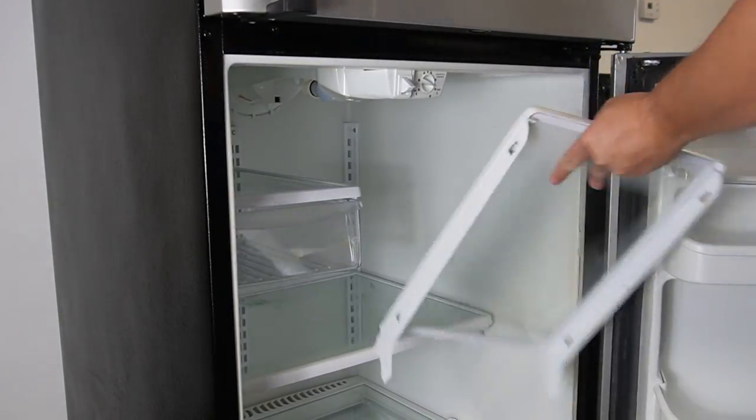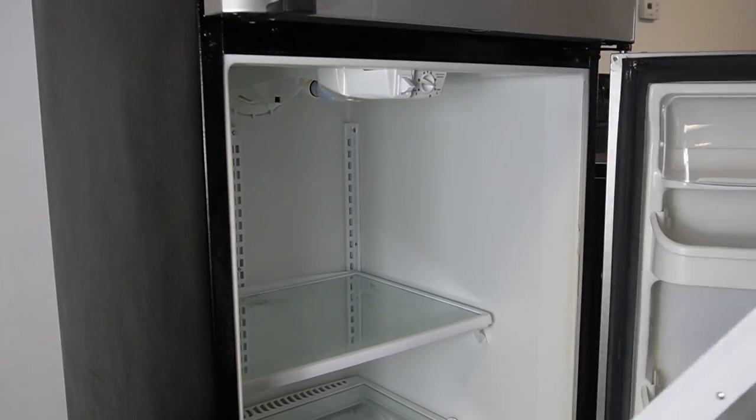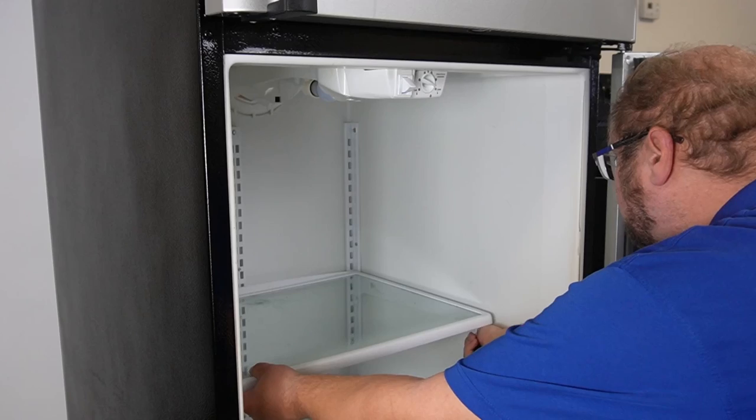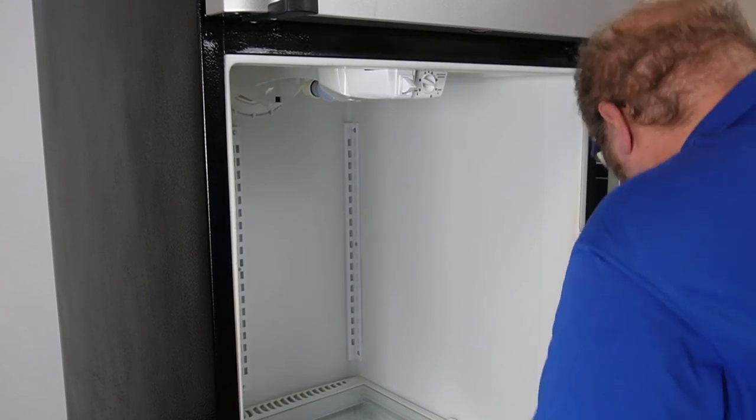Once this is completed, let's go ahead and start removing all the shelving. Depending on a few factors, you can remove all the drawers in the refrigerator, but I was able to work with removing all but the bottom shelving in the case of this specific Frigidaire refrigerator.